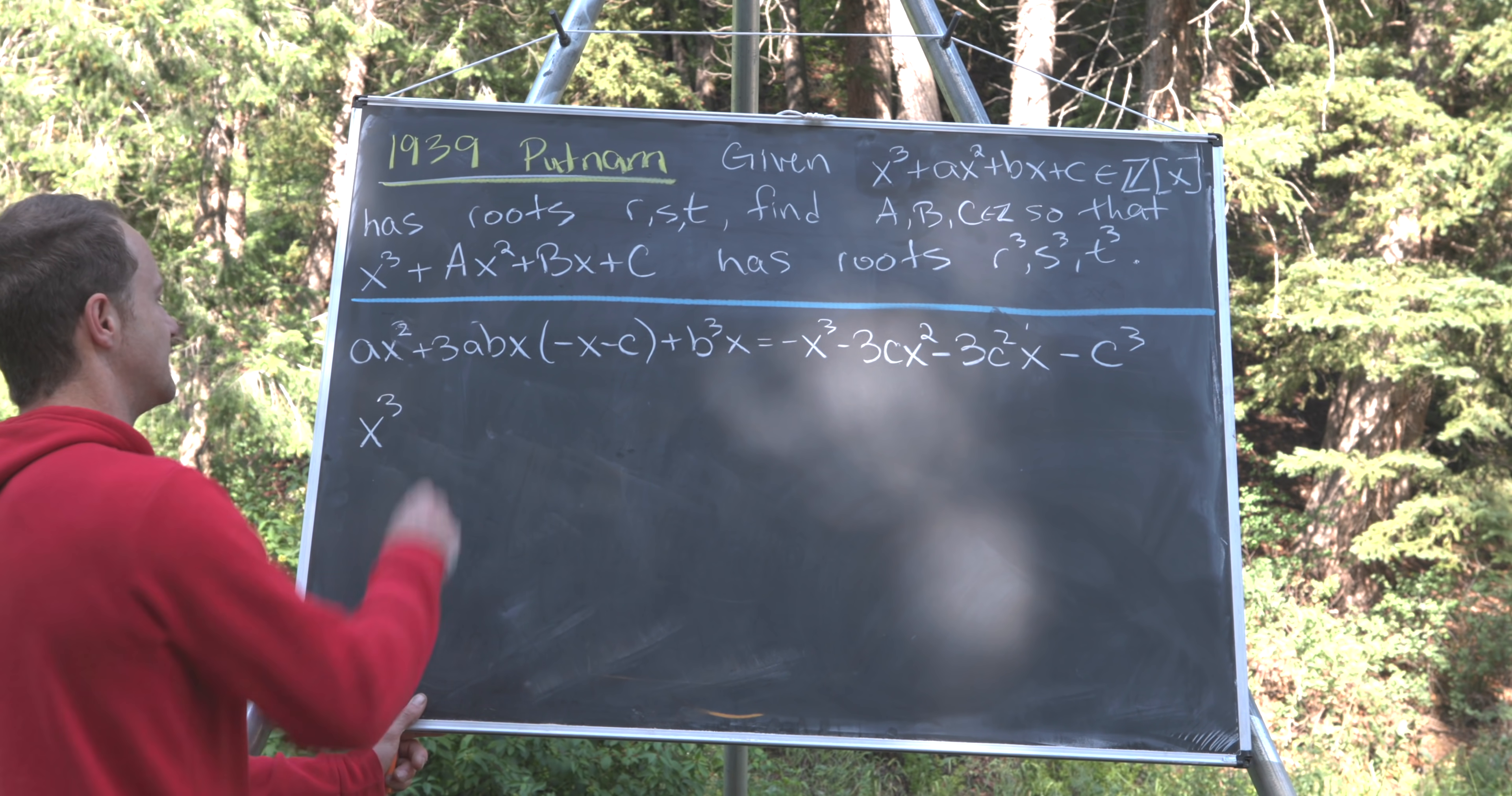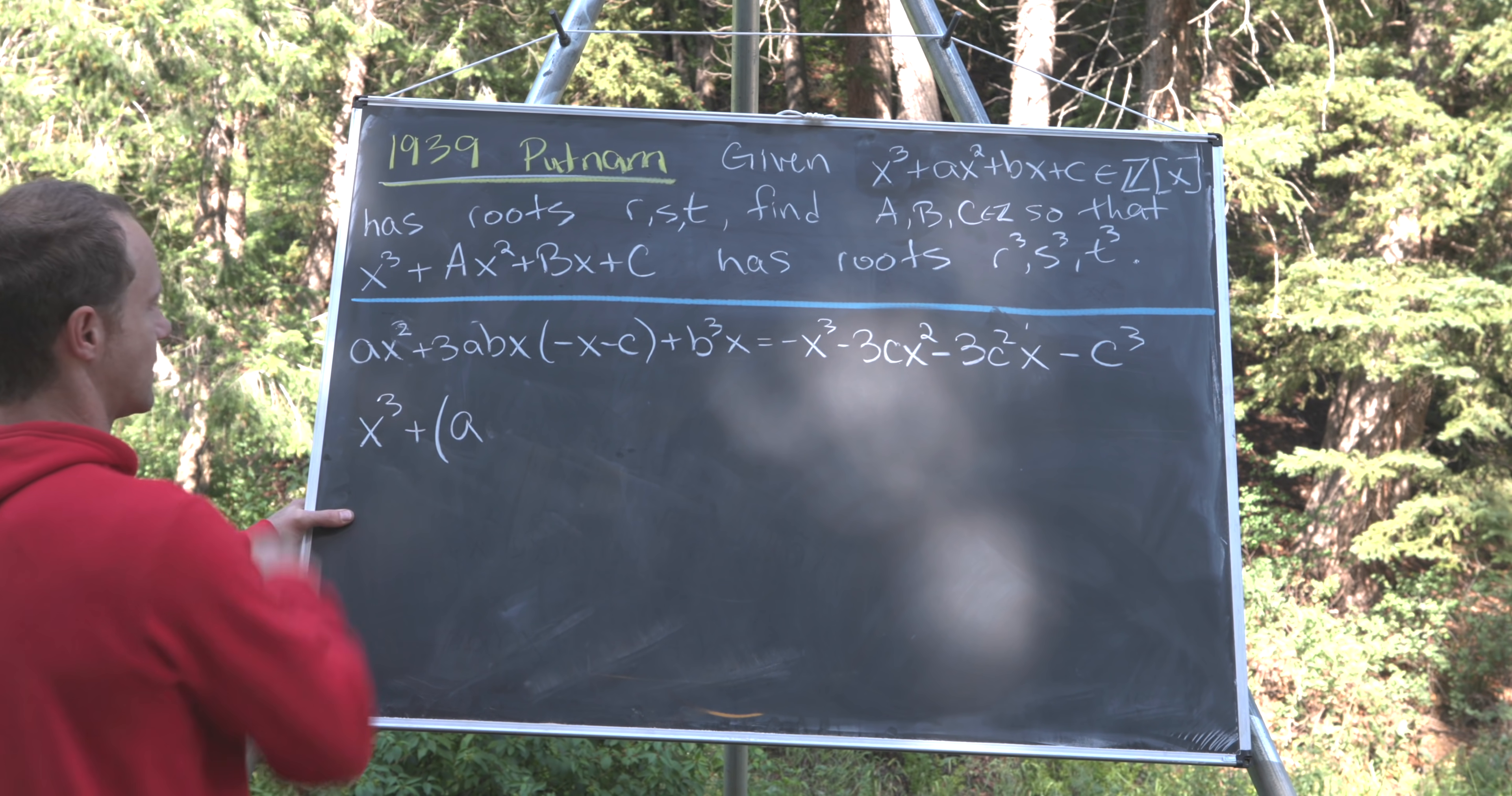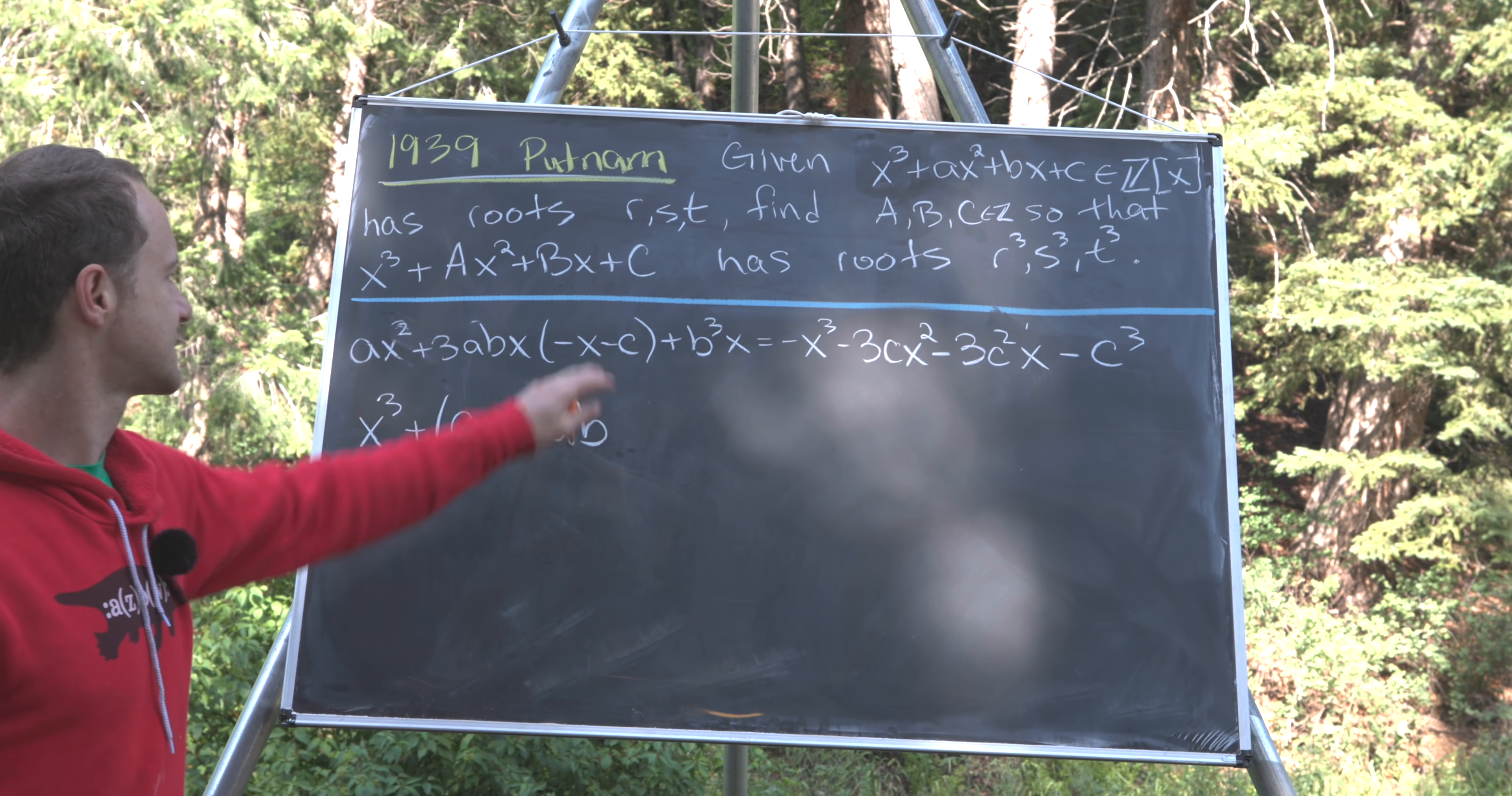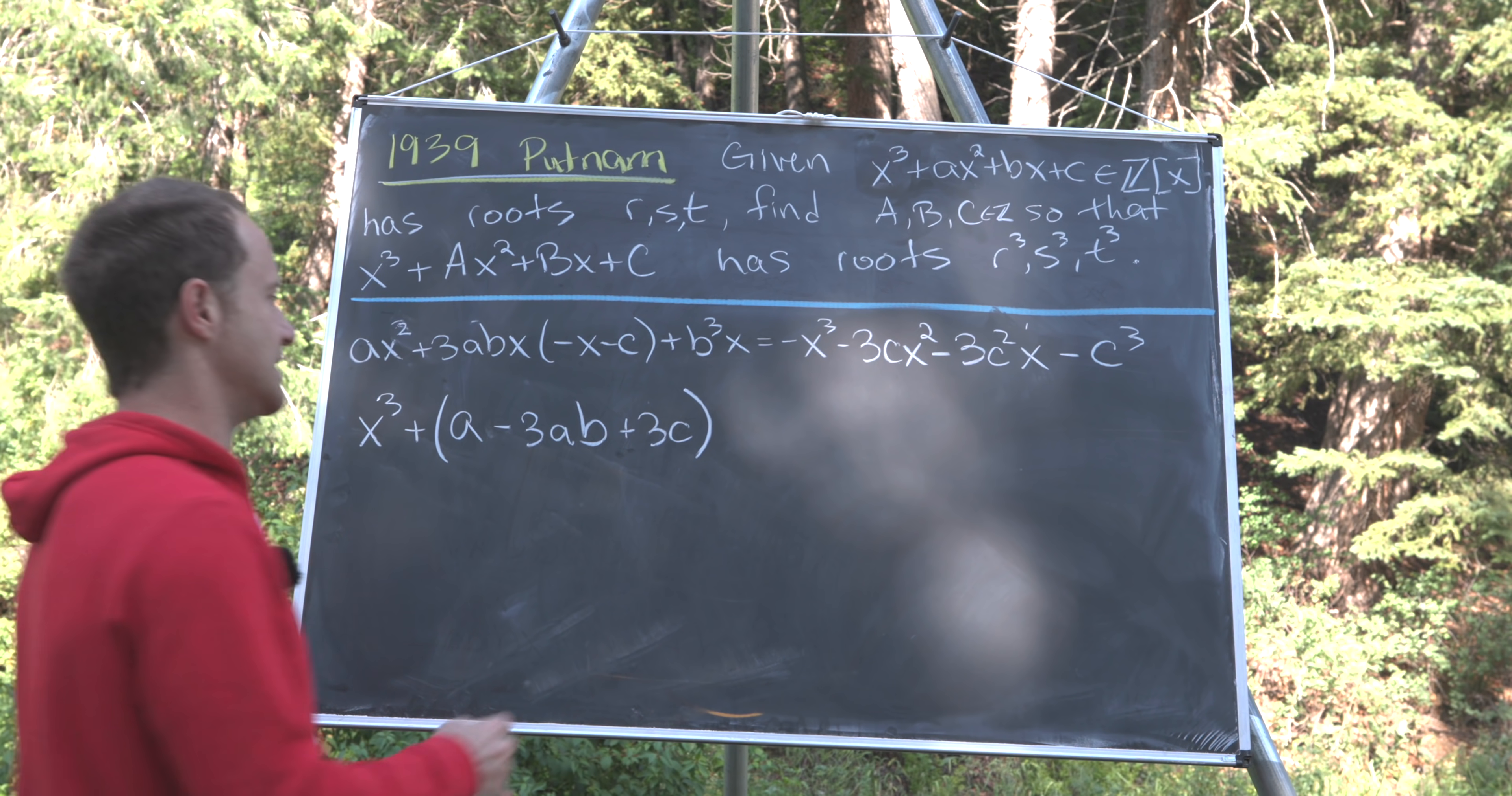So we'll have x³. That's like our highest order term. And then let's see what our x² term is. So we'll have a³ from here and then we'll have a minus 3ab from this term hitting this, okay? And then we'll have a plus 3c from this guy over here moving to the left-hand side of the equation. So that's our coefficient of x².